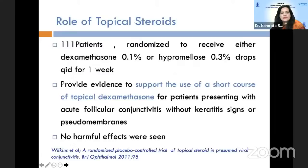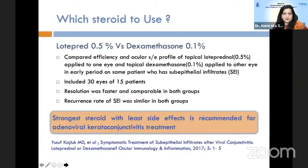A 2011 trial of 111 patients randomized to dexamethasone 0.1% or hypromellose concluded it does shorten the course of the disease with no harmful effects. A study comparing loteprednol 0.5% and dexamethasone 0.1% found no difference in outcomes, concluding one should use the strongest steroid with least side effects for adenoviral keratoconjunctivitis treatment.